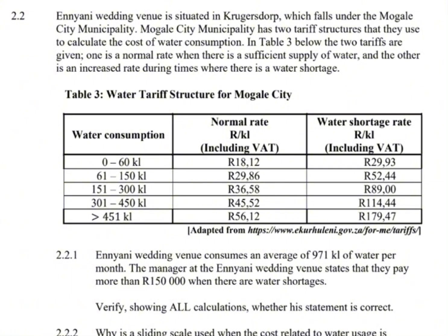Water consumption: Block No. 1, which is 0 to 60. Block No. 2, 61 to 150. Block No. 3, 151 to 300. Block No. 4, 301 to 450.